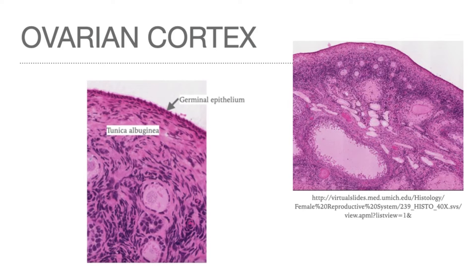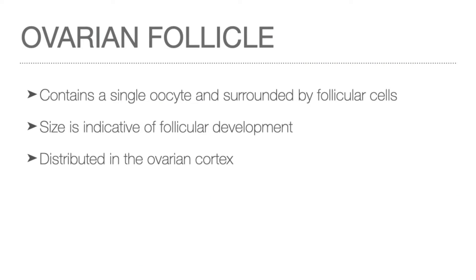Looking at the higher magnification of the ovarian cortex, a low-cuboidal germinal epithelium lines the outer surface of the ovary. Beneath this is an avascular connective tissue called the tunica albuginea. The ovarian follicle contains a single oocyte surrounded by follicular cells. The primordial follicles are the only follicles present at birth. The size of these follicles is indicative of its maturity. The smaller primordial follicles are located nearer the ovarian surface. As the follicle matures, it gradually increases in size and grows towards the medullary area, but remains within the boundary of the ovarian cortex.